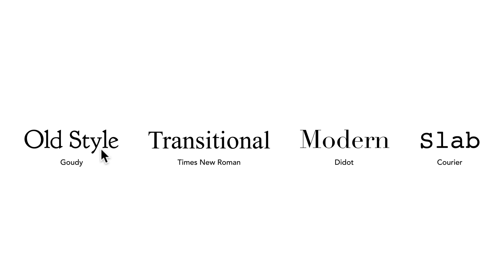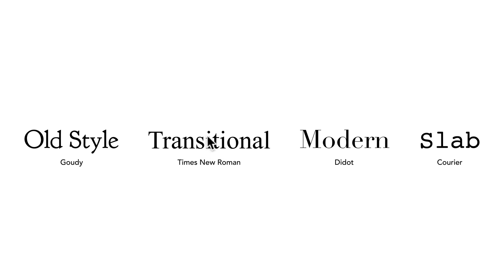The next subtype is transitional. What we're using here is Times New Roman. Times New Roman and Baskerville are both transitional serif fonts. One thing you'll notice is the difference between thick and thin lines — these strokes are a bit more pronounced here. Comparing this to something like old style, we start seeing a little bit more contrast between those strokes, but not as much as modern or Didone — and that is our next subtype.